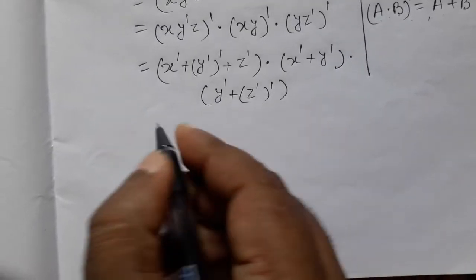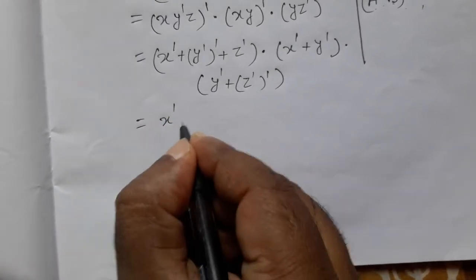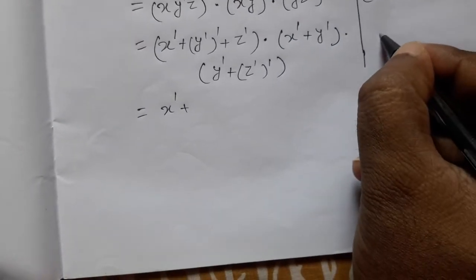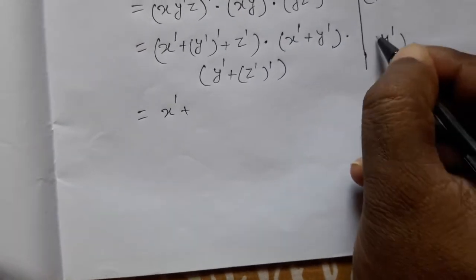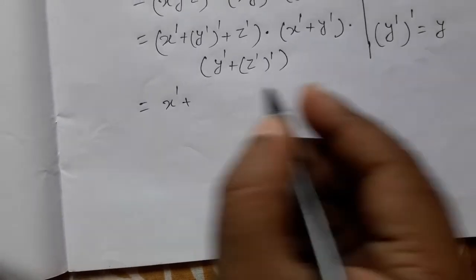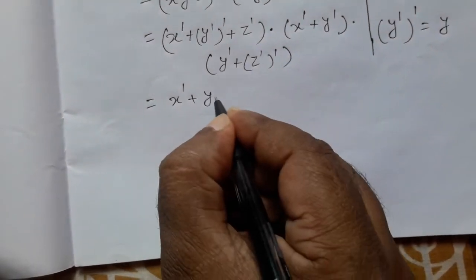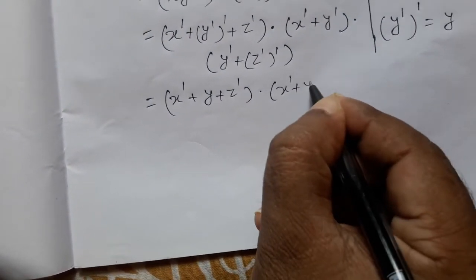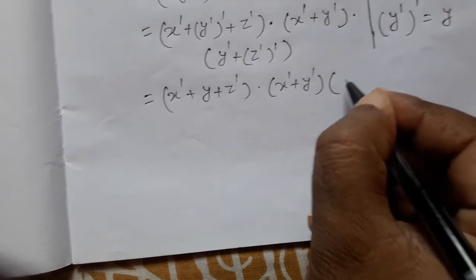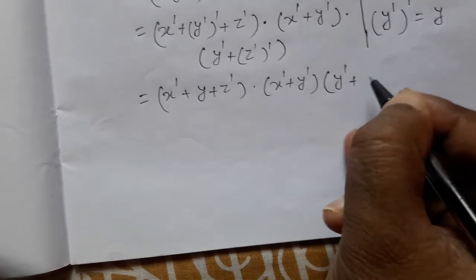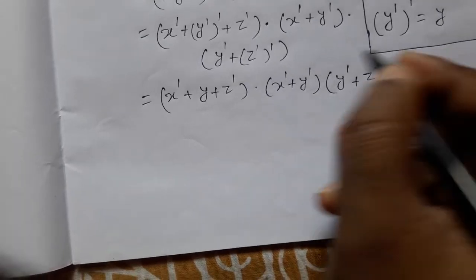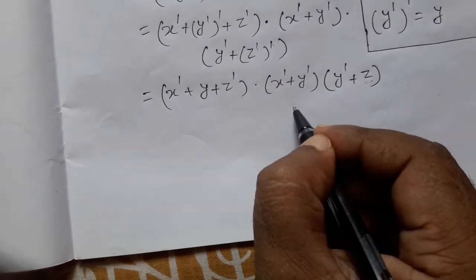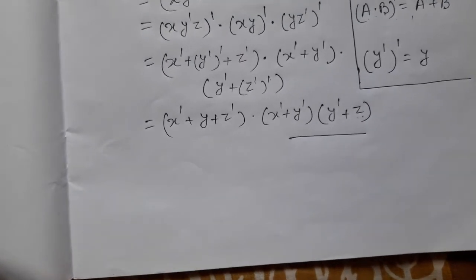Now applying the double complement rule: y-complement whole complement becomes y. So we write y plus z-complement, into x-complement plus y, into y-complement plus z. Because z-complement whole complement equals z. That is our final complement answer.